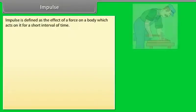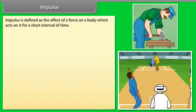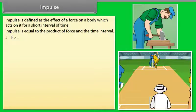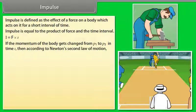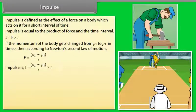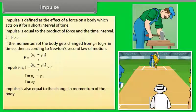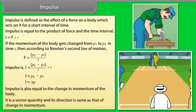Impulse is defined as the effect of a force on a body which acts on it for a short interval of time. Impulse equals the product of force and time interval: I = F × T. If the momentum of a body changes from P1 to P2 in time T, then impulse I = P2 − P1 = ΔP. Impulse is also equal to the change in momentum of the body. It is a vector quantity and its direction is the same as that of the change in momentum.